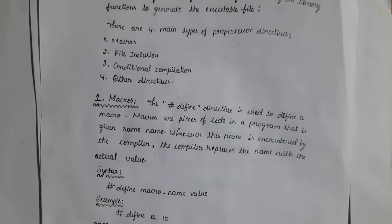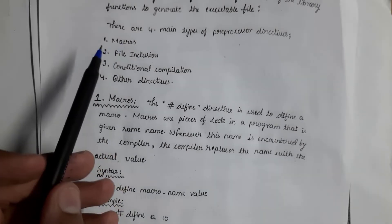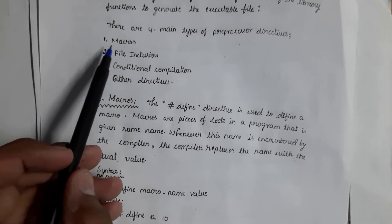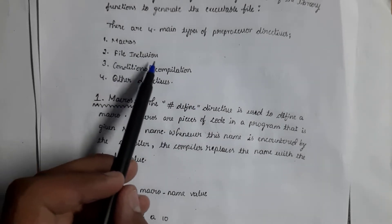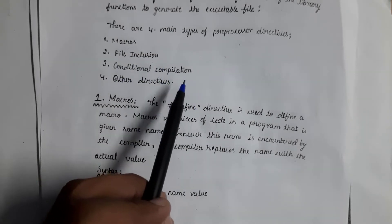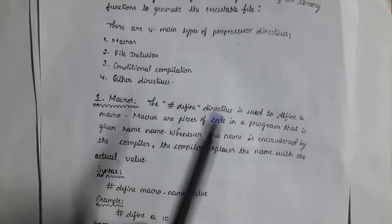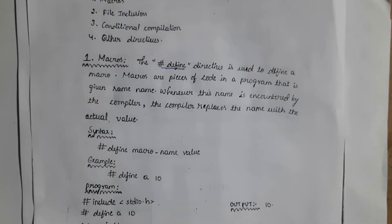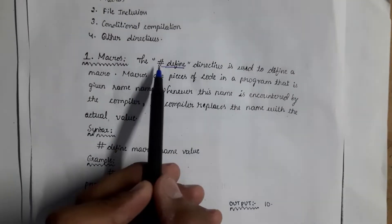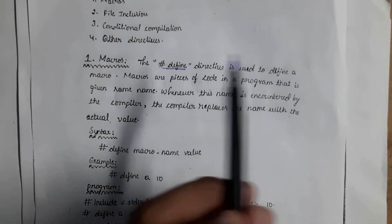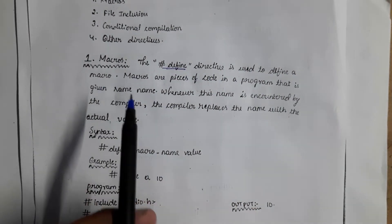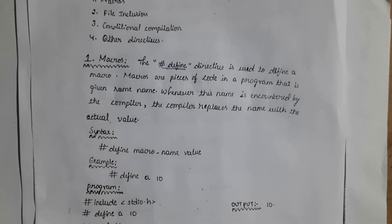Pre-processor directives are classified into four types — we can also call them pre-processor commands. The first one is macros, the second is file inclusion, the third is conditional compilation, and the fourth is other directives.